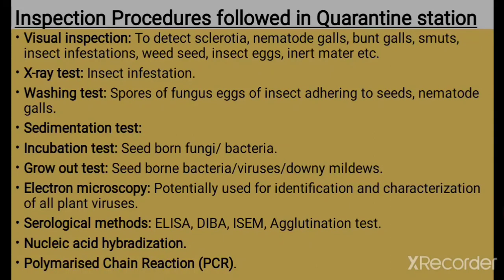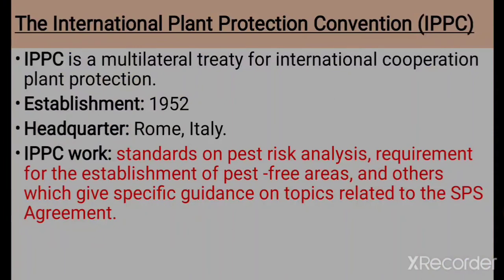The International Plant Protection Convention — IPPC — is a multilateral treaty for international cooperation in plant protection. It was established in 1952 and its headquarters are situated in Rome, Italy. The work of IPPC includes setting standards on pest risk analysis, requirements for the establishment of pest-free areas, and other guidance on topics related to the SPS agreements.